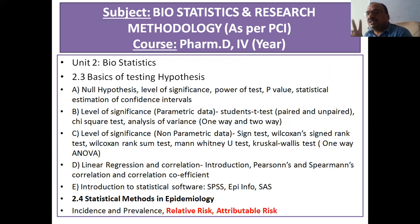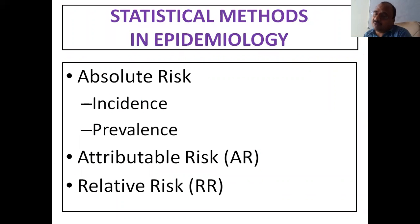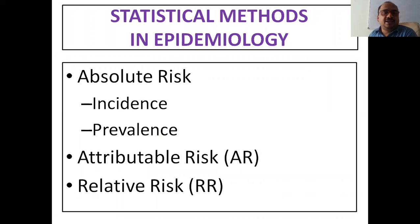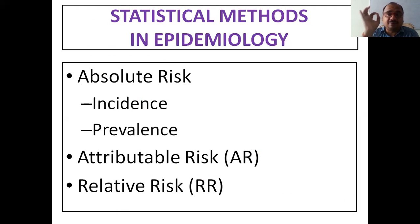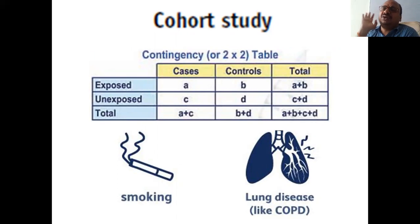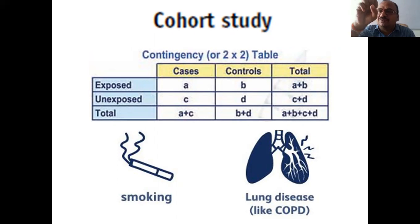Statistical methods in epidemiology are broadly divided into three categories. First, absolute risk — also called incidence and prevalence, covered in the last video. Second, attributable risk (AR) — whenever you see AR, it means attributable risk. Third, relative risk (RR). This is the main concept, and it is very simple and interesting.